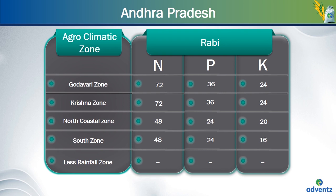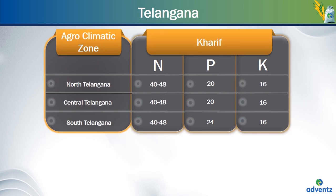When the area of plantation changes, the requirement also changes. For the rice crop planted in the Kharif season in North Telangana, the amount of nitrogen needed is 40 to 48 kgs per acre, the amount of phosphorus required is 20 kgs per acre and potassium is needed to the amount of 16 kgs per acre. For the rice crop planted in the Kharif season in Central Telangana, the nitrogen, phosphorus and potassium requirements are the same as North Telangana: nitrogen 40 to 48 kgs per acre, phosphorus 20 kgs per acre and potassium 16 kgs per acre.